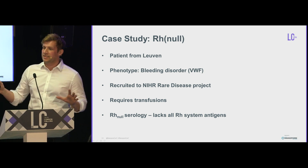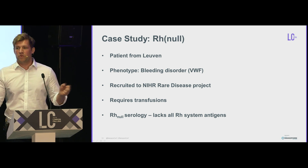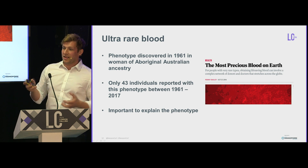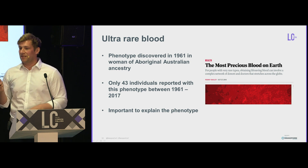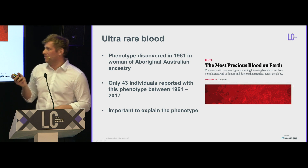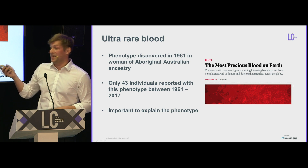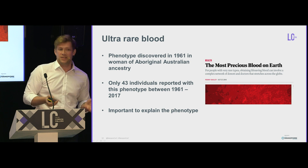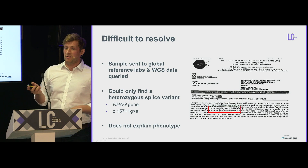RH null means she lacks all of the rhesus system antigens. Rhesus positive/negative is just one of them — there are actually two more very common ones and many beyond that. Her blood is ultra-rare: this phenotype was first discovered in 1961 in a woman of Aboriginal ancestry, and only 43 people globally had ever been identified with this blood group between then and 2017. It was extremely important to explain why she has this phenotype.